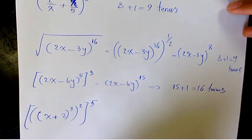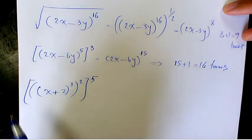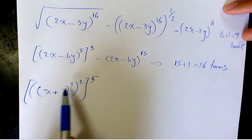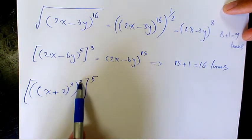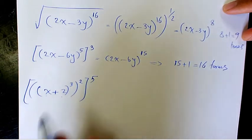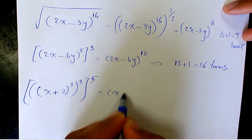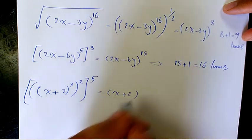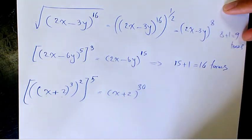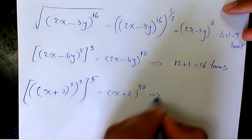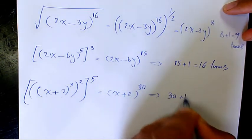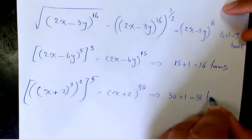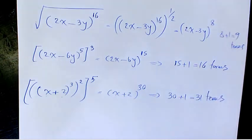Next one: (x+2)^3 to the power of 2 to the power of 5. So the index is going to be 3 times 2 times 5, which will be 30. So the index of this binomial expansion is going to be 30. How many terms we're going to end up with after expansion? 30+1, we're going to end up having 31 terms.